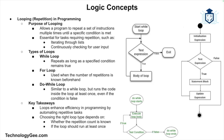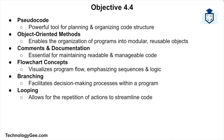Next we'll talk about looping, or repetition. Looping allows a program to repeat a set of instructions multiple times until a certain condition is met. There are several types of loops: a while loop repeats as long as a specified condition is true; a for loop is used when you know how many times you want to repeat a set of instructions; and a do-while loop is similar to a while loop but runs at least once even if the condition is false. Loops are essential for tasks like iterating through a list of items or continuously checking for user input.